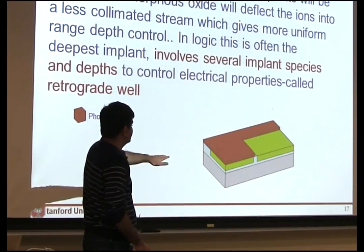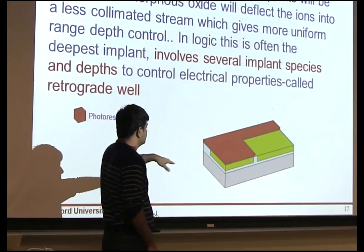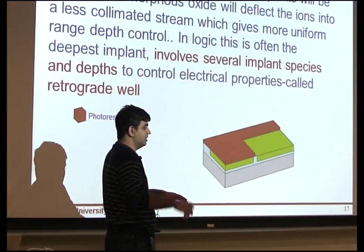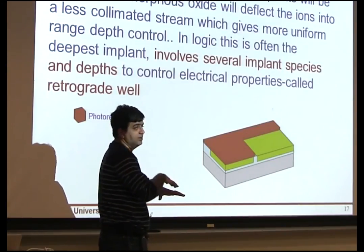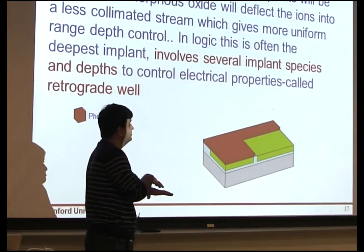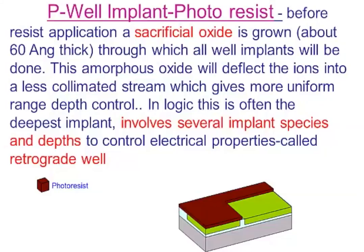So you put a sacrificial oxide because you're going to implant with such a high energy, you don't want to damage your substrate. So there's a sacrificial oxide that you put, and then many times you use not one implant but multiple implants.